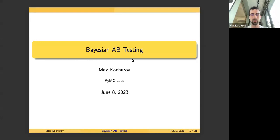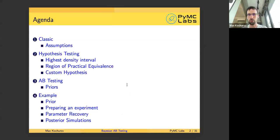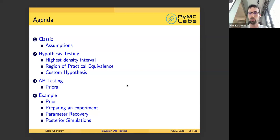Hello everyone, the recording has started. Here is the fifth lecture about modern Bayesian statistics, and today we will learn about how to perform Bayesian A-B testing. We will start from reviewing what is missing from the classical A-B testing framework, what can be improved, and what are the weak spots that are very challenging to deal with.